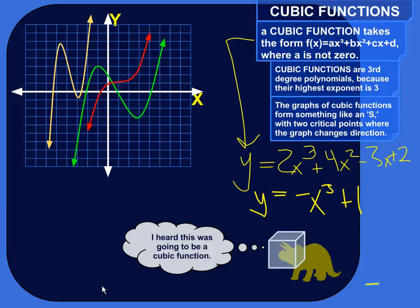So a cubic function is not like a party where you wear a cube for a hat or anything like that. It's actually a function with the form f of x is equal to ax cubed plus bx squared plus cx plus d.